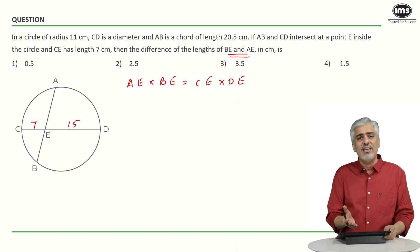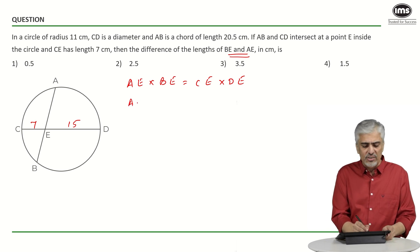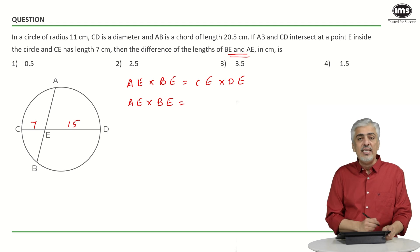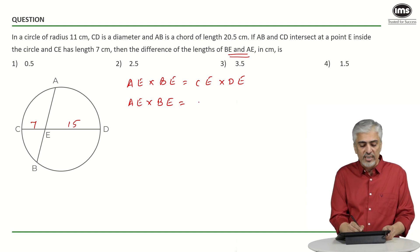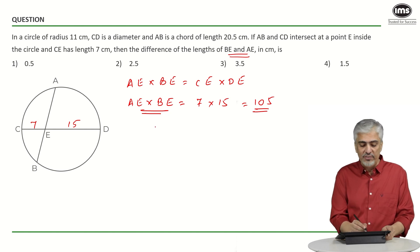We don't know AE and BE both. You could take one as x and the other as 20.5 minus x, but let's just leave it as is for now. So AE times BE equals CE times DE, which is 7 times 15, that's 105. So the product of AE and BE is 105.